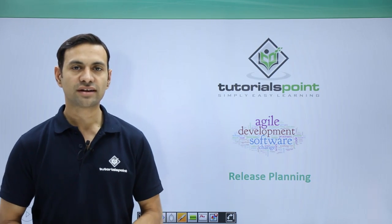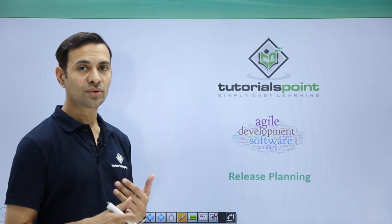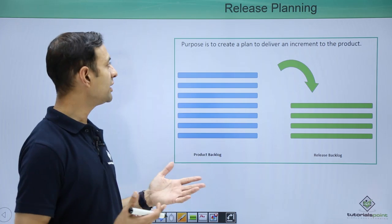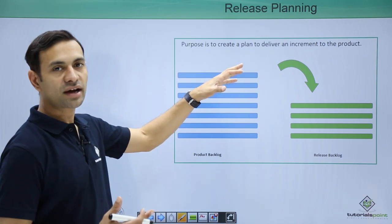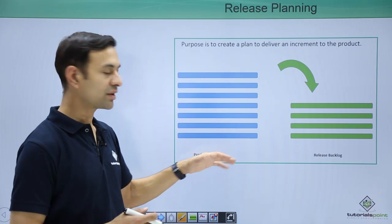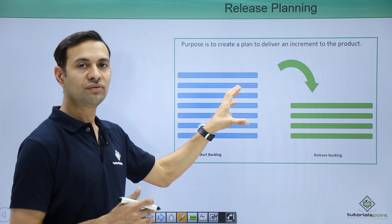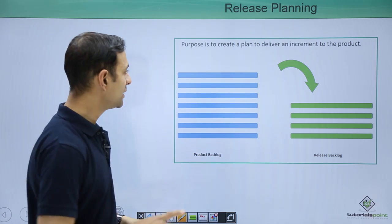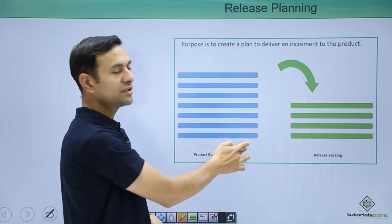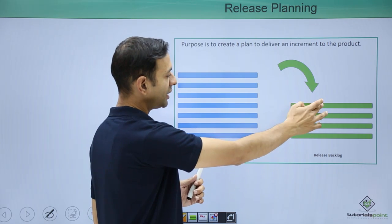Hello friends, welcome to Tutorials Point. In this session I am going to cover release planning — what to do and how to do release planning. Release planning is basically to create a plan to increment our product. We have a set of functionality in our product backlog which we are going to put in our release backlog. During this release, how many features are we going to implement? For example, I have 7 features in a particular product to be added, so I choose 4 out of 7 in my release backlog.